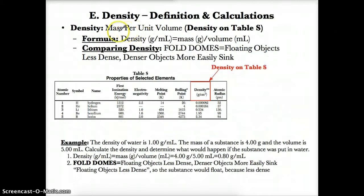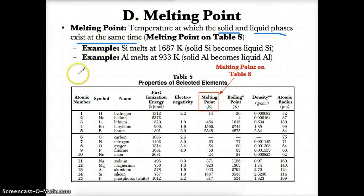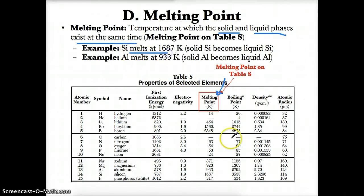Now let's discuss how to find melting point. Melting point is the temperature at which the solid and liquid phases exist at the same time — specifically, the temperature at which a solid becomes a liquid. Melting point is located in a specific column on Table S for elements. For example, Si has a melting point of 1687 Kelvin, meaning solid Si becomes liquid Si at 1687 Kelvin.